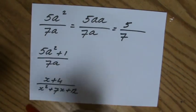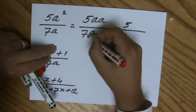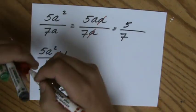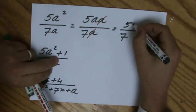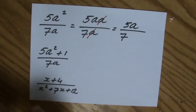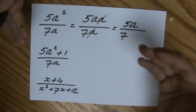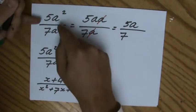But I do have, when I look at the letters, some common factors. An a and an a. So let's get rid of those. So what is left? I'll have an a at the top left. So 5a over 7 is the simplified version of that fraction.